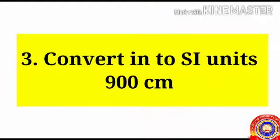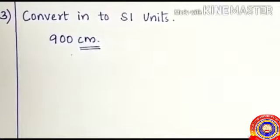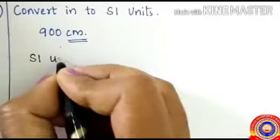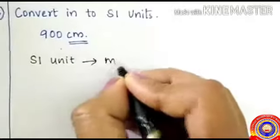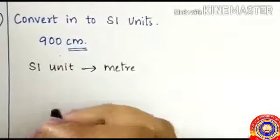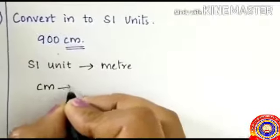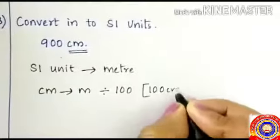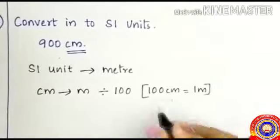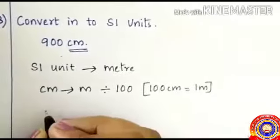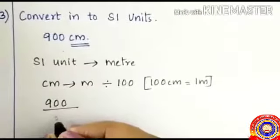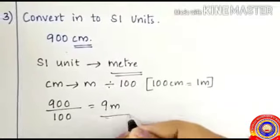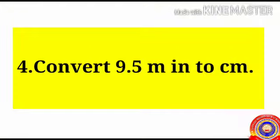Next: convert nine hundred centimeters into SI unit. To convert centimeter to meter, divide by one hundred, since one hundred centimeters equals one meter. So nine hundred divided by one hundred equals nine, and the answer is nine meters.